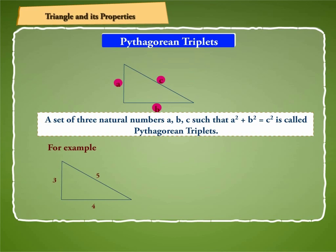For example, 3, 4, 5, 9, 12, 15, etc. are Pythagorean triplets.